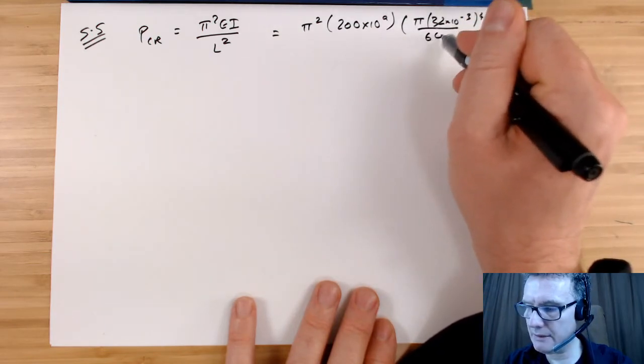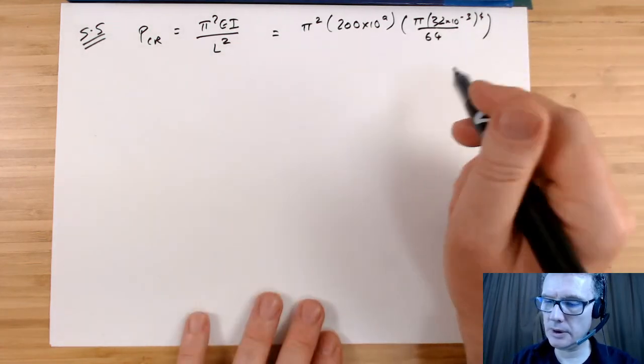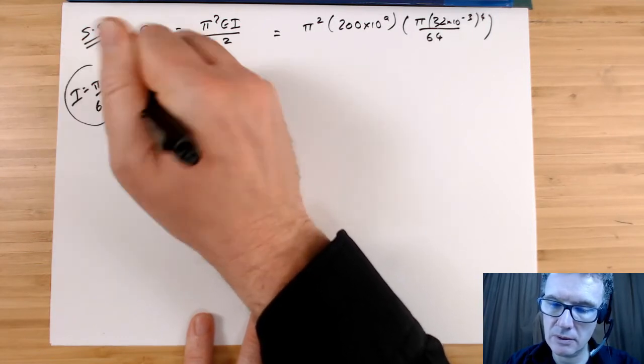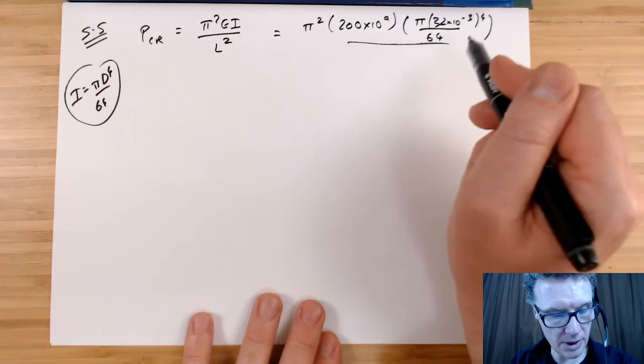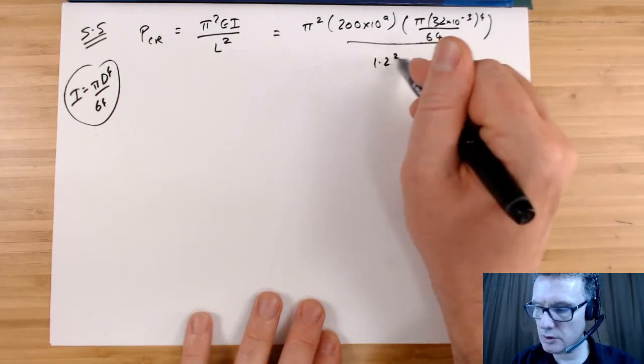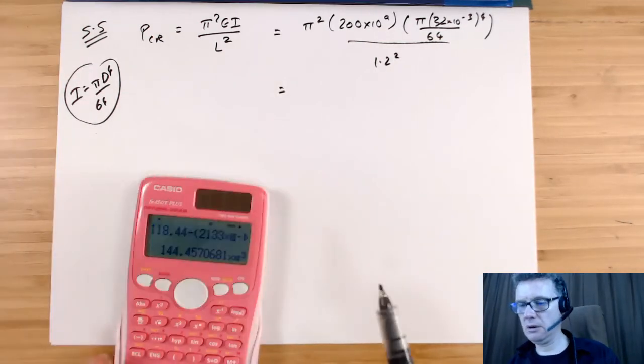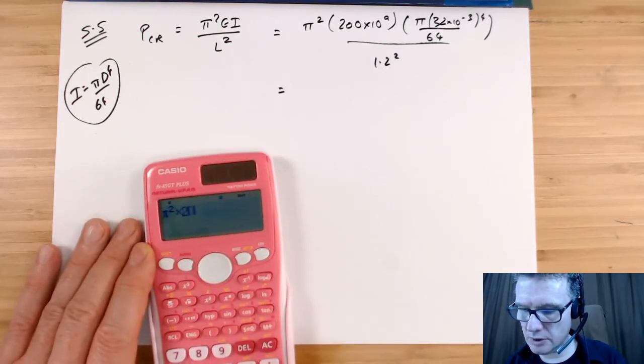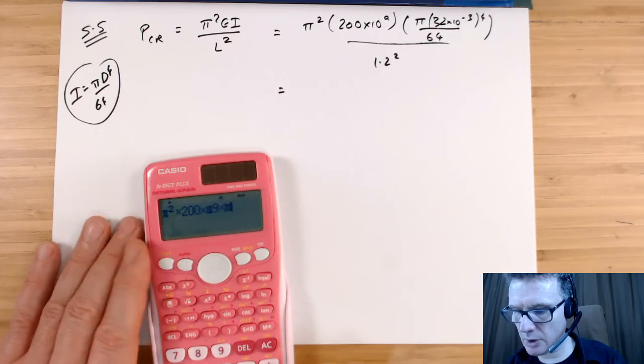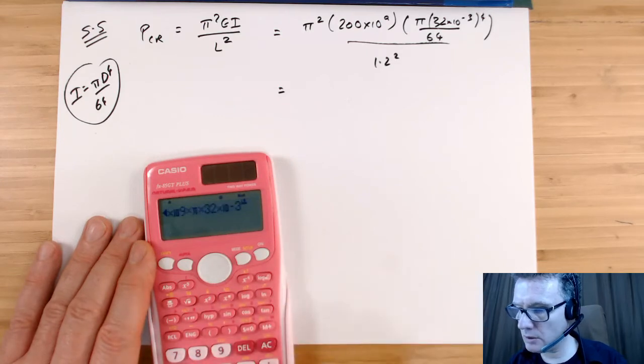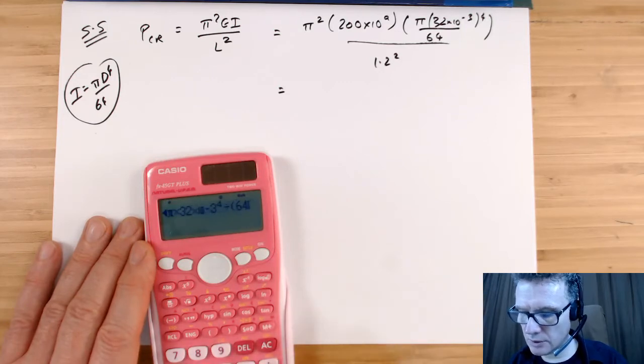Divided by 64. So I equals πD⁴ over 64, divided by the length 1.2². So what does that give me? π² times 200 times 10⁹ times π again, times 32 times 10⁻³ to the power 4, divide that by 64 times 1.2².